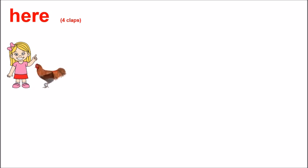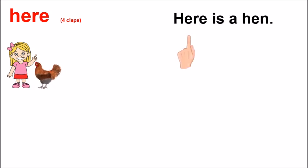Here is the hen. Hen is near to the girl. Read this sentence. Here is a hen.